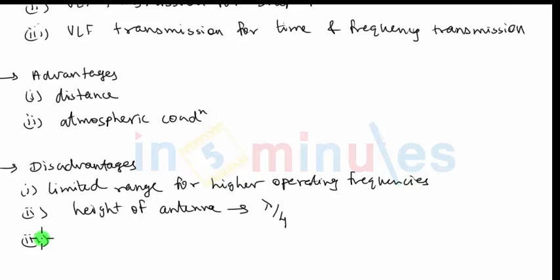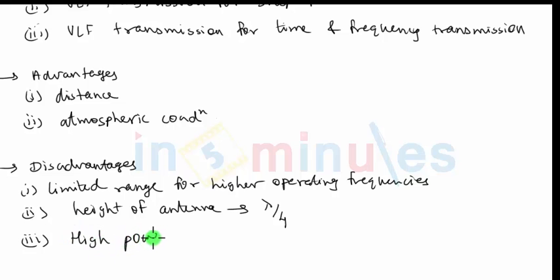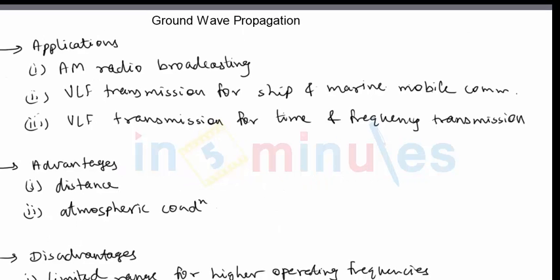The third disadvantage is that high transmission power is necessary to cover adequate range. Power in excess of 1 megawatt is common. The large distance coverage, which is one important advantage, can only be achieved in most cases with very high transmission power. So high power transmission is one more drawback of ground wave propagation, especially when trying to cover large distance ranges.